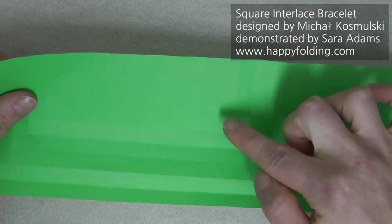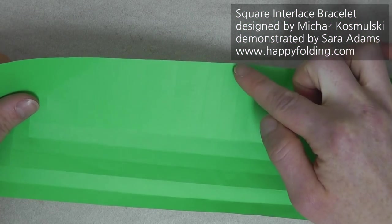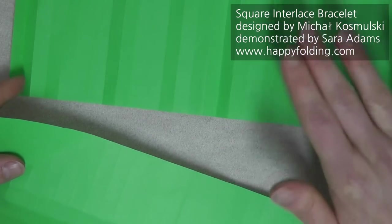So now you have five divisions right here, and you repeat the steps on this side, and, of course, also for the second strip.